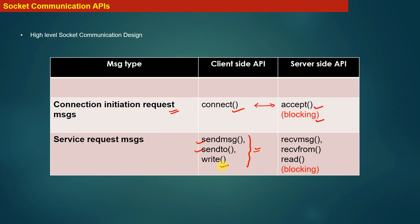If you are using the write system call, then to read the corresponding message on the other side you use the read system call. For sendto, the corresponding system call is recvfrom. And if you use sendmsg to send a message, then the corresponding API on the other side is the recvmsg system call. There is a one-to-one mapping: write with read, sendto with recvfrom, and sendmsg with recvmsg.